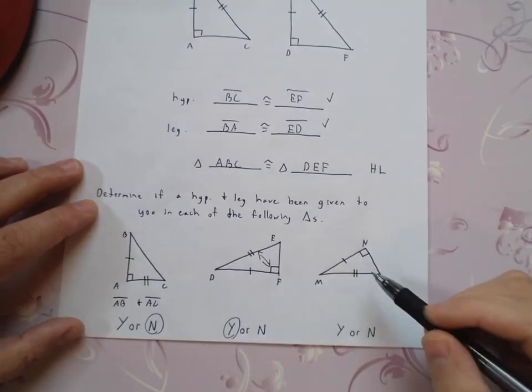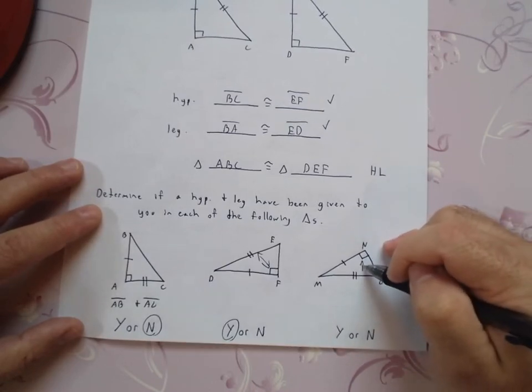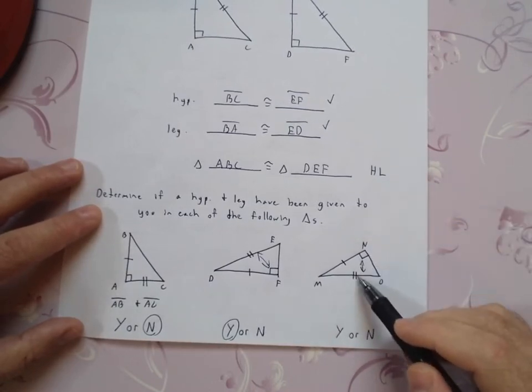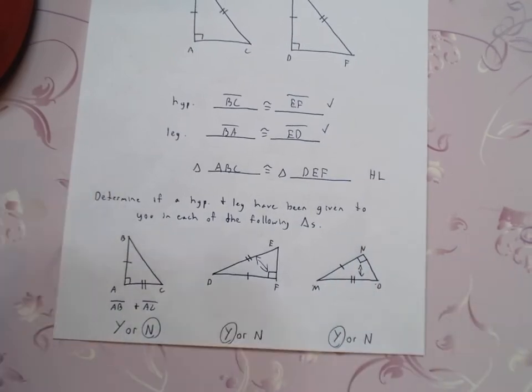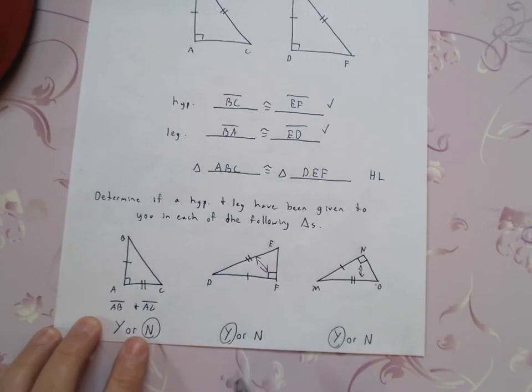So let's look at the last one. Is this a hypotenuse leg? Well, again, this side is across from my 90 degree angle. That's a hypotenuse. We got a leg. So yes, that's a hypotenuse leg.